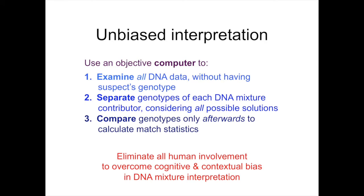An unbiased interpretation can be done by using an objective computer to first examine all the DNA data without having a suspect's genotype. Second, separate the genotypes of each DNA mixture contributor, considering all possible allele pair solutions for each contributor. And third, compare genotypes only afterwards — only after the genotypes have been separated — to calculate match statistics. Using an objective computer in this way eliminates all human involvement to overcome cognitive and contextual bias.